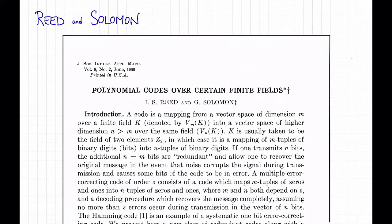One thing you might have been wondering after the previous video, where we observed this great trade-off between rate and distance, is: how can we efficiently decode Reed-Solomon codes from errors? It turns out we can, and this is not at all obvious. In fact, Reed and Solomon didn't actually know how to do that when they first proposed the code — the original decoding algorithm in that paper is not at all optimal.